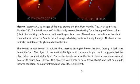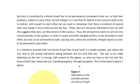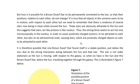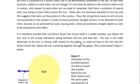But how is it possible for a brown dwarf star to be permanently connected to the Sun, so that their positions relative to each other do not change? Now, it is true that all objects in the universe seem to be in motion with respect to each other. But we need to remember that there is evidence of several stars now being in close orbits around the Sun. And these stars are obviously attracted to the Sun, and this suggests that stars act like protons in the nucleus. And therefore, it suggests that the strong force seems to act not only microscopically in the nucleus in order to cause positively charged protons to be attracted to each other, but also on an astronomical scale, causing stars which are positively charged objects as well to be attracted to each other.